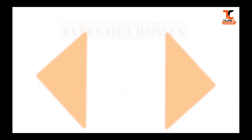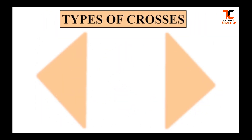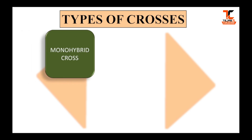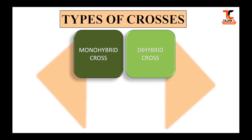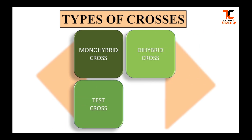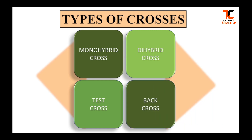There were four types of crosses performed initially by Mendel, which we can see on the screen. The first is monohybrid cross, the second is dihybrid cross, the third is test cross, and the fourth is back cross.